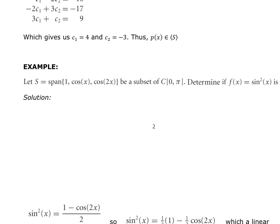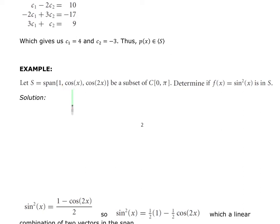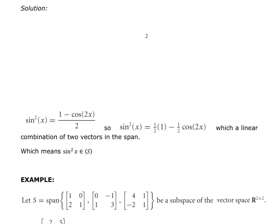In another example, the span is defined by {1, cos x, cos 2x} on the interval from 0 to pi. We want to determine whether sine squared x is within the span — that is, can it be written as a linear combination of those elements? Using the power reduction formula from precalculus, sine squared x equals (1 minus cos 2x) divided by 2, which rewrites as one-half times 1 minus one-half times cos 2x. This is a linear combination of vectors in the span, so sine squared x is within the spanning set.